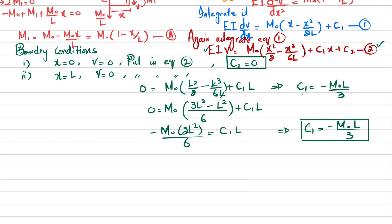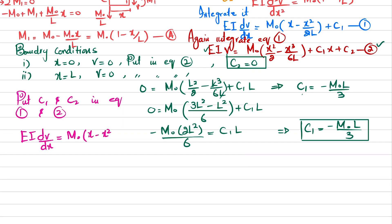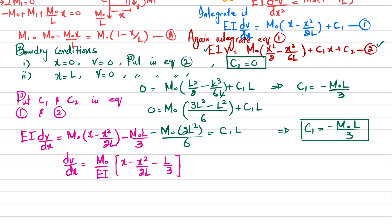Now we have C1 and C2. Substituting C1 into equation 1: EI times dv/dx equals M0 times (x minus x²/2L) minus (minus M0·L/3). So the slope equation is: dv/dx equals (M0/EI) times (x minus x²/2L minus L/3). This is equation 3, the equation of slope.